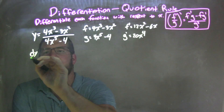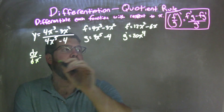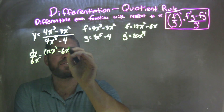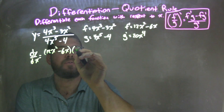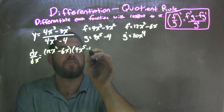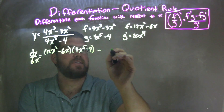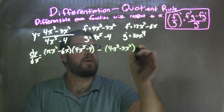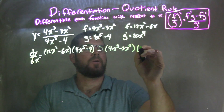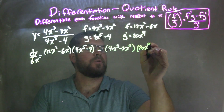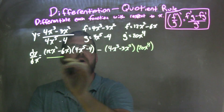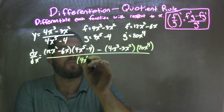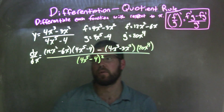I'm going to take my derivative dy/dx, and that's going to equal f prime — 12x squared minus 6x — times g, which is 4x to the fifth minus 4, minus f, which is 4x to the third minus 3x squared, times g prime, which is 20x to the fourth, all over g squared, which is 4x to the fifth minus 4, squared.